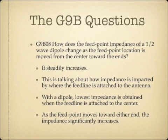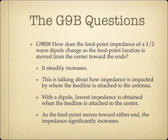How does the feed point impedance of a half-wave dipole change as the feed point location is moved from the center toward the ends? The answer is that it steadily increases. The lowest impedance is obtained when the feed line is attached directly in the middle of the dipole, with a quarter wavelength of wire on either end. As the feed point moves toward either end — more than a quarter wavelength on one side and less on the other — the impedance increases.